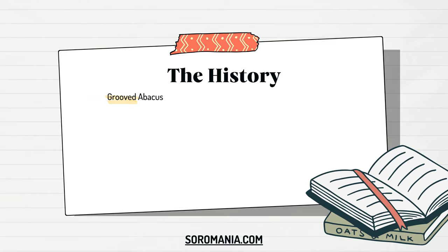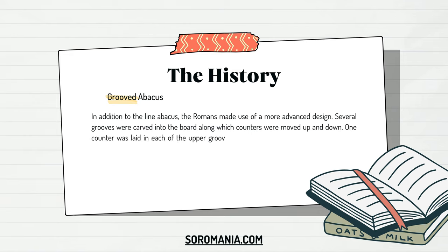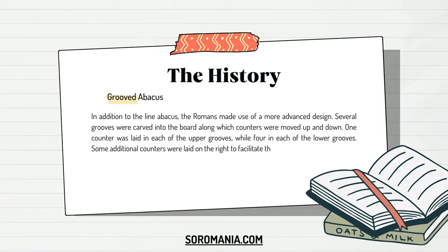The Grooved Abacus: in addition to the Line Abacus, the Romans made use of a more advanced design. Several grooves were carved into the board along which counters were moved up and down. One counter was laid in each of the upper grooves, while four in each of the lower grooves. Some additional counters were laid on the right to facilitate the calculation of fractions.